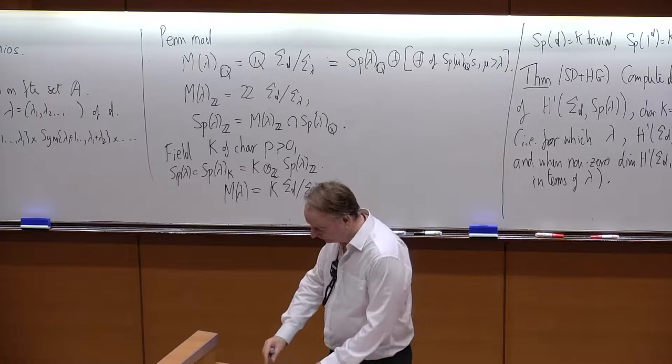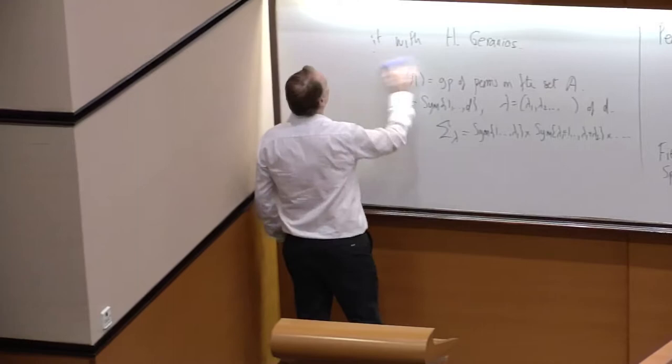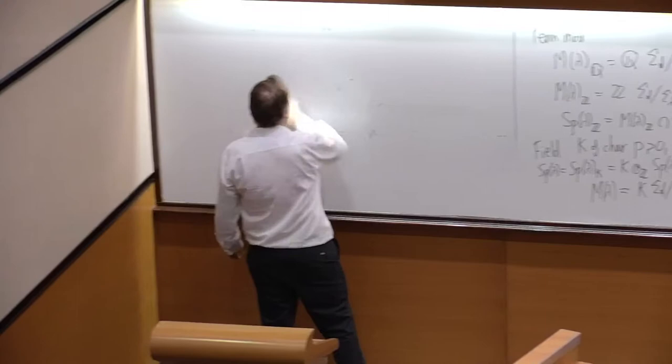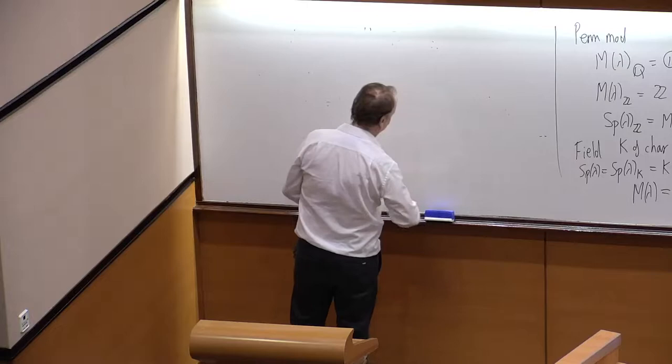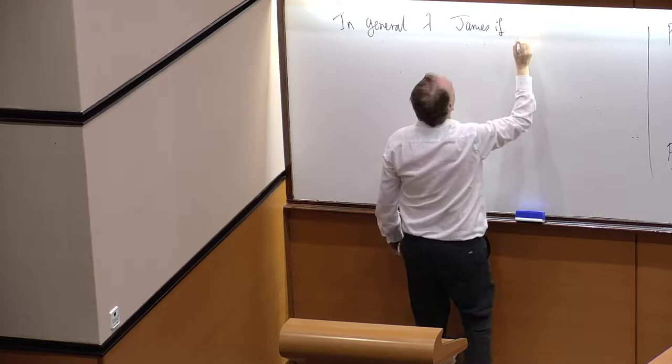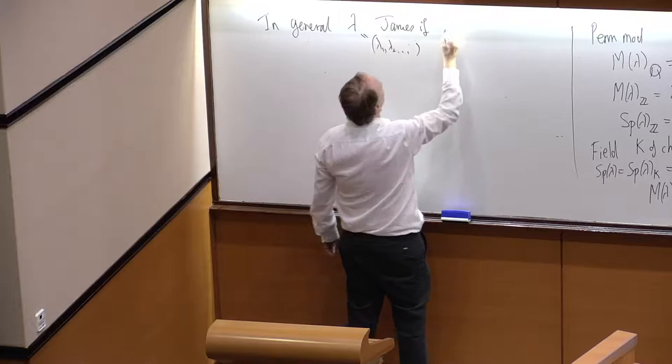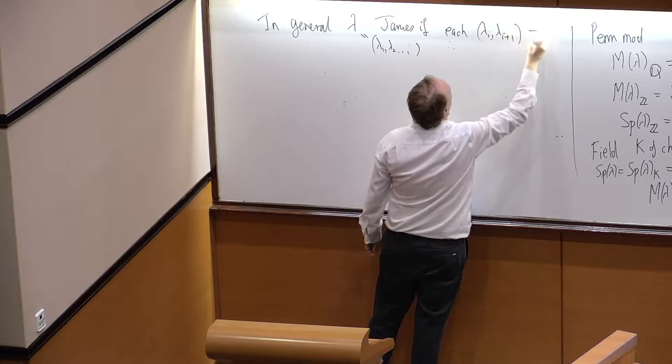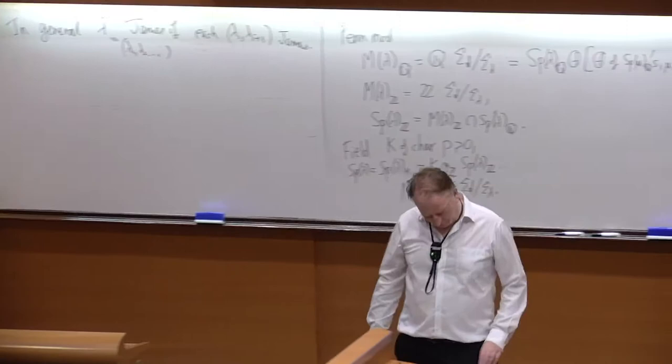So, way of thinking about that. But, there's another way of thinking about it which is even better from our point of view. So, this is equivalent to A+i choose i is congruent to 0 mod p for all 1 less than or equal to i less than or equal to B as you easily see from Lucas's formula. That's a two-part partition and so a general partition will be called James if each consecutive pair in the partition is James. If each pair λ_i, λ_{i+1} is James.